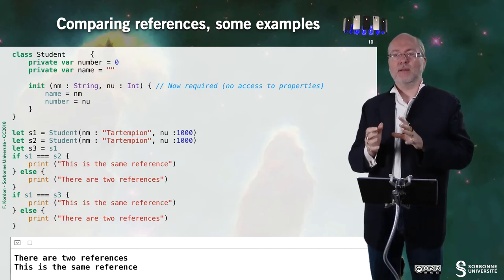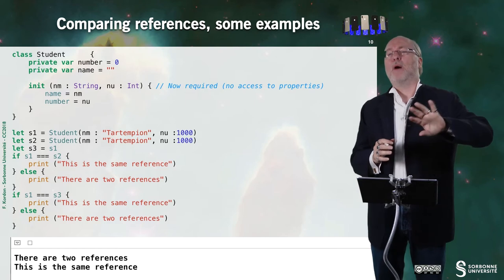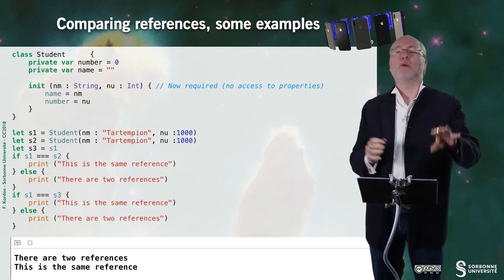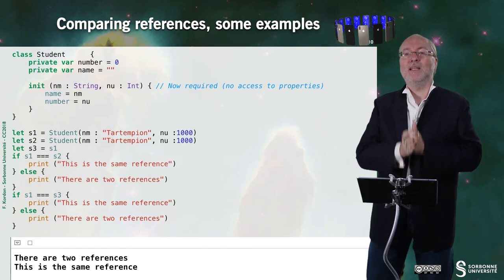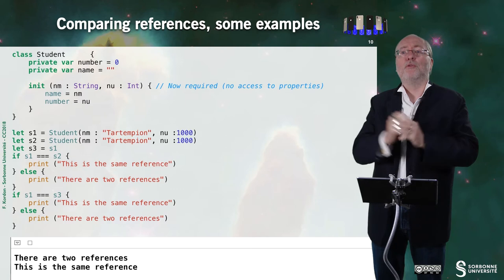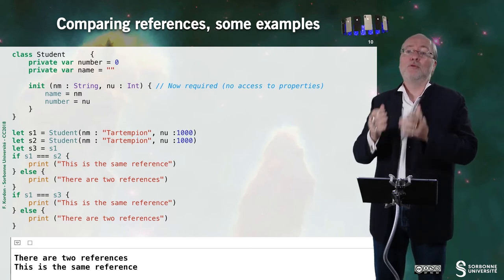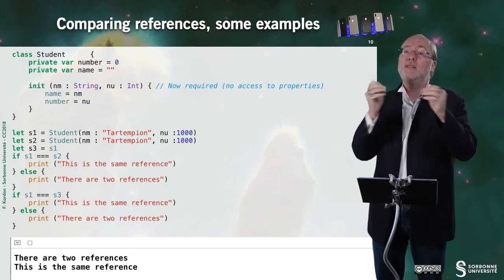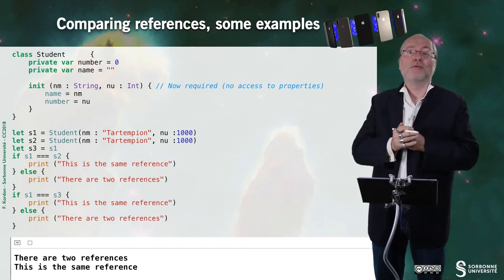So in fact, in Swift, apart from the assignment that I will not mention anymore because you have it in any language, you can compare explicitly the references or the content of the references in a very easy way. It's a bit more complicated in some other languages. In Ada, for example, you have to add .all when you want to compare the full content of the memory because by default, comparison is the comparison of the references.